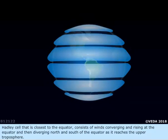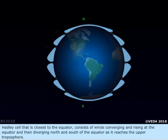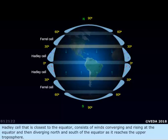Hadley cell that is closest to the equator consists of winds converging and rising at the equator and then diverging north and south of the equator as it reaches the upper troposphere.